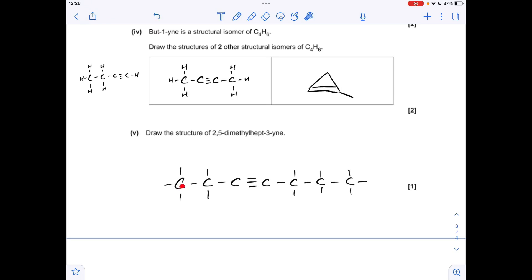And for the final part of the question, so I've got the beginnings of the structure here just to show that hept-3-yne needs seven carbons and the triple bond goes between carbons three and four. We also need two methyl groups, first one on carbon two and the next one on carbon five.